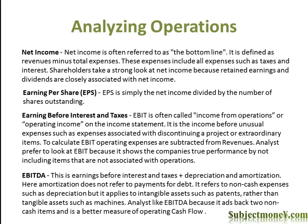Earnings before interest and taxes is often called income from operations or operating income on the income statement. It is the income before unusual expenses such as expenses associated with discontinuing a project or extraordinary items. To calculate EBIT, operating expenses are subtracted from revenues. Analysts prefer to look at EBIT because it shows the company's true performance by not including items that are not associated with operations.